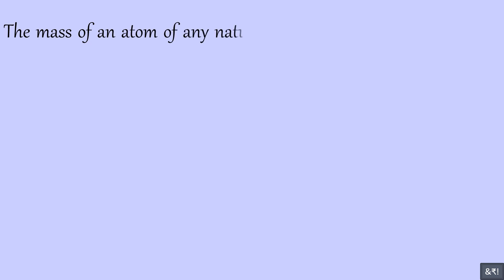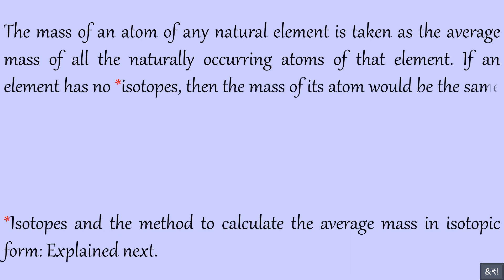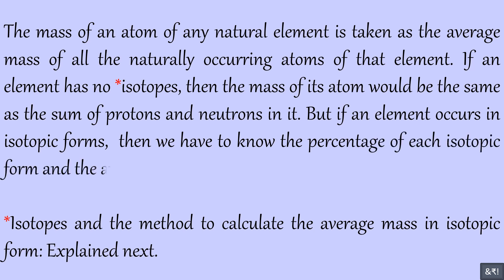The mass of an atom of any natural element is taken as the average mass of all the naturally occurring atoms of that element. If an element has no isotopes, then the mass of its atom would be the same as the sum of protons and neutrons in it. But if an element occurs in isotopic forms, then we have to know the percentage of each isotopic form and the average mass is calculated.